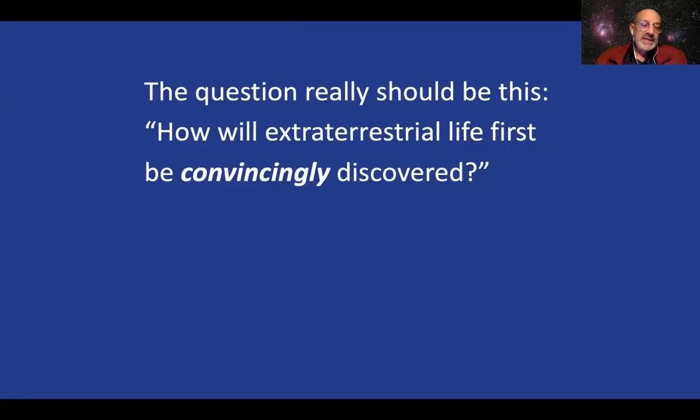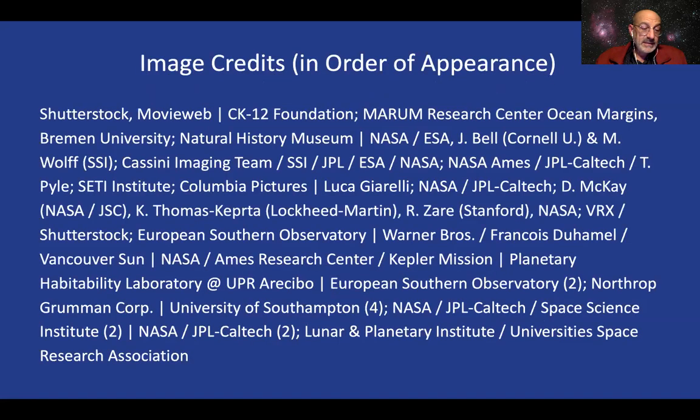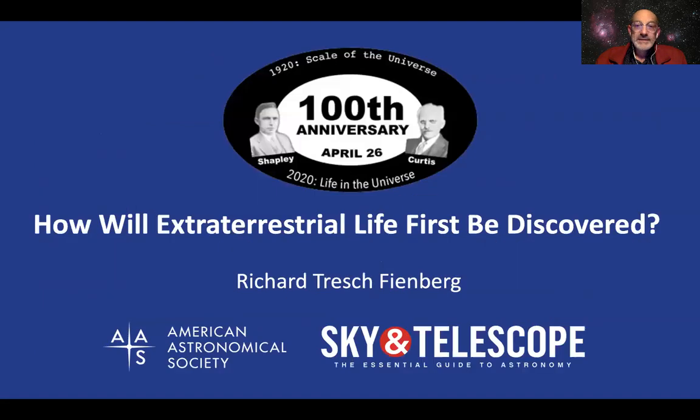So the question we're debating really should be this. How will extraterrestrial life first be convincingly discovered? My answer? Via the identification of living organisms in the subsurface ocean on one of Jupiter's or Saturn's moons. Now, I don't expect you to read these image credits in real time, but they're here in case you want to look at them later. This is Rick Feinberg wishing you clear skies and happy alien hunting and hoping that you stay safe and healthy out there. Thanks for watching.